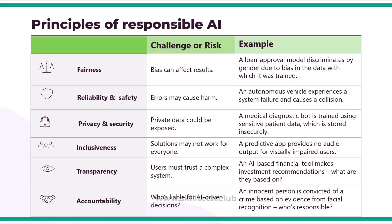The second principle is reliability and safety. When you develop an AI application, it can have issues and errors — for example, an autonomous vehicle with a self-driving experience sounds cool, but there are chances the vehicle can have a system failure that causes a collision. You have to first make sure that AI applications are sufficiently reliable and safe for every user.